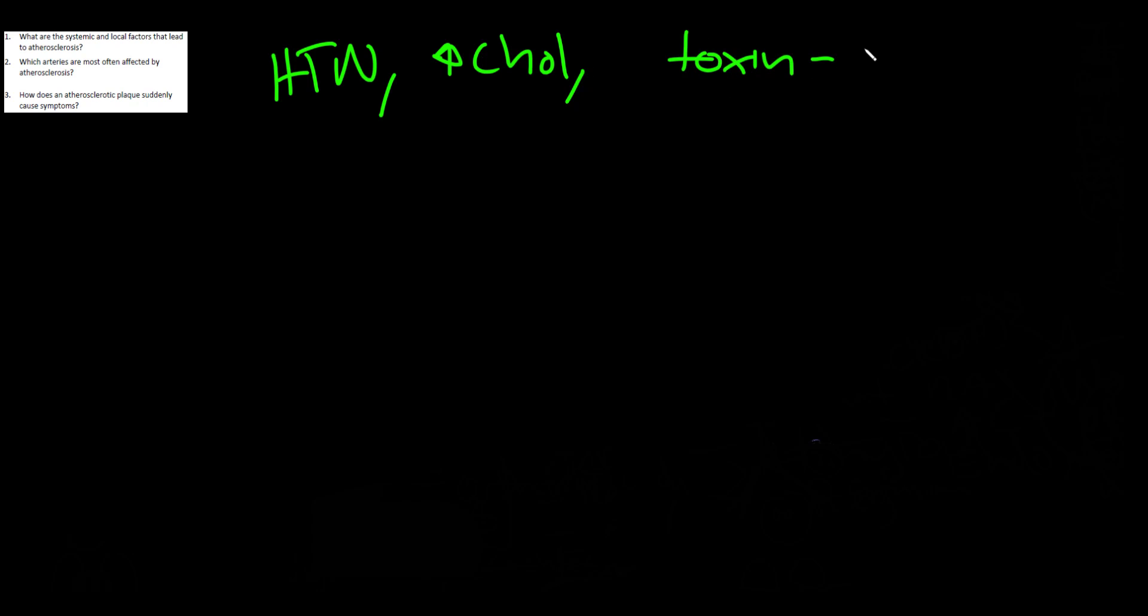Also toxins, specifically smoking being the big issue. You can also get things like infection stages. At the local level, it's about local flow disturbances. So that's why you see more atherosclerosis in different places. Specifically turbulence at branch points.